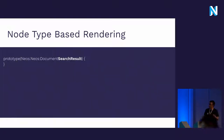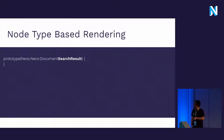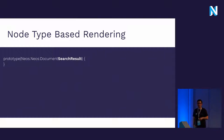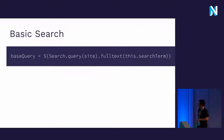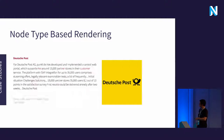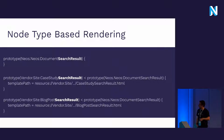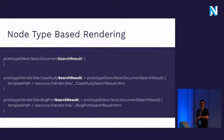This rendering logic is handled by the search plugin in a smart way — it looks for a prototype that begins with the document name and ends with 'search result'. There is one default prototype, the Neos Document Search Result, which is used whenever the plugin doesn't find anything more suitable. All you have to do if you want to define custom rendering is add a new prototype — for example 'Vendor.Site.CaseStudy.SearchResult' — and there you can exchange the template or do whatever you want with the node object passed into it.